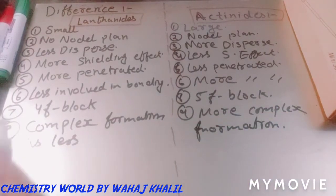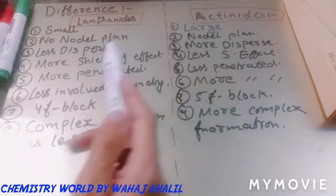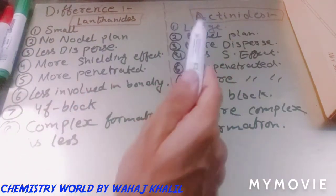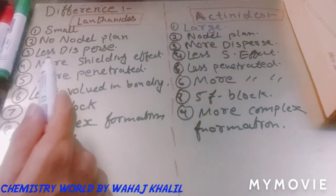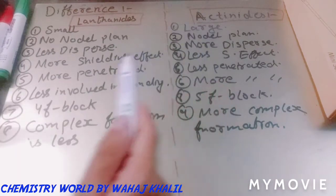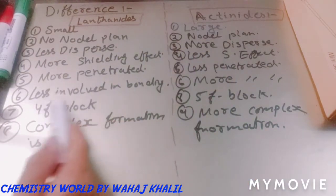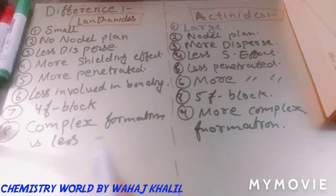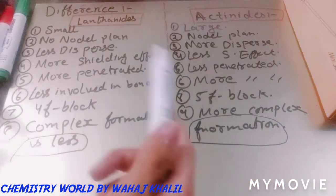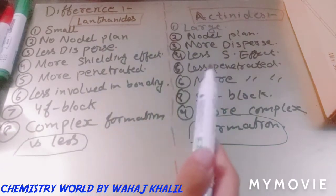So this was the difference between lanthanides and actinides. First: size — small vs. large. Second: nodal planes. Third: less dispersed vs. more dispersed. Fourth: more shielding effect vs. less shielding effect. Fifth: more penetrated vs. less penetrated. Sixth: less vs. more involved in bonding. Seventh: 4f block vs. 5f block. Eighth: less vs. more complex formation.